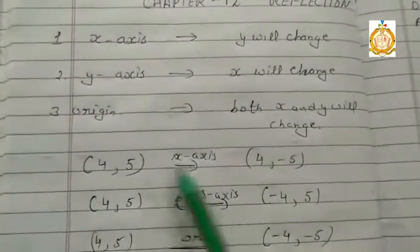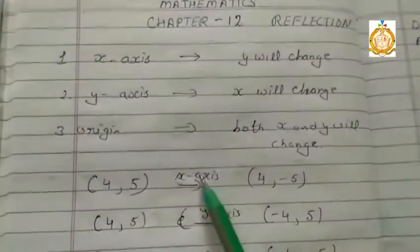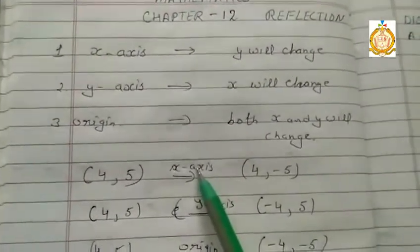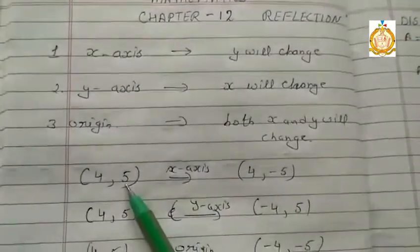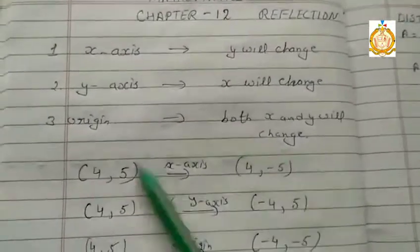Now given point is (4, 5). Reflection on x-axis: what will change? Change will be on y. That means this value of y, 5 that is positive, now becomes negative. If negative is given, that becomes positive.